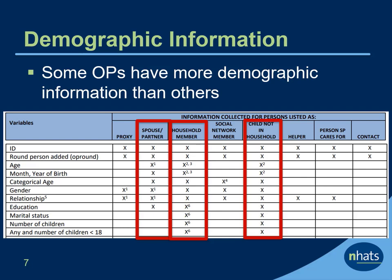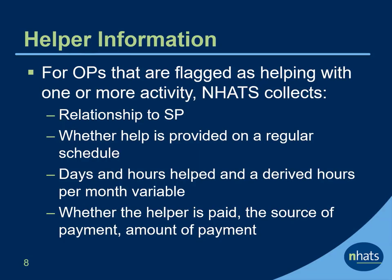A complete table with this information is available in the NHATS User Guide. For OPs who are flagged as helping with one or more activity, NHATS collects the following information: relationship to SP, whether the help is provided on a regular schedule, days and hours helped, and a derived hours per month variable. Whether the helper is paid, the source of payment, and the amount of payment.